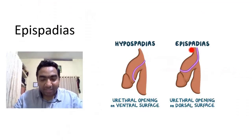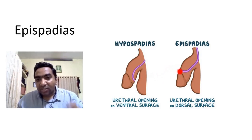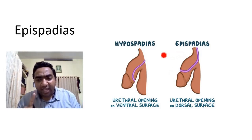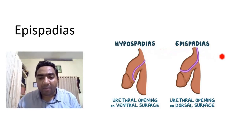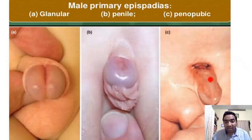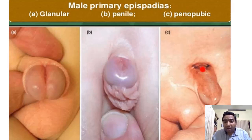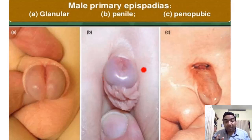Another condition is epispadias. Unlike hypospadias where the opening is on the underside, epispadias is a type of lower abdominal maldevelopment — the lower part of the abdominal wall is not completely developed. There are different types: glandular epispadias, penile epispadias, and penopubic epispadias. In penopubic epispadias, the lower part of the abdominal wall is not completely closed — that is the main problem with epispadias, rather than just the urethral development.